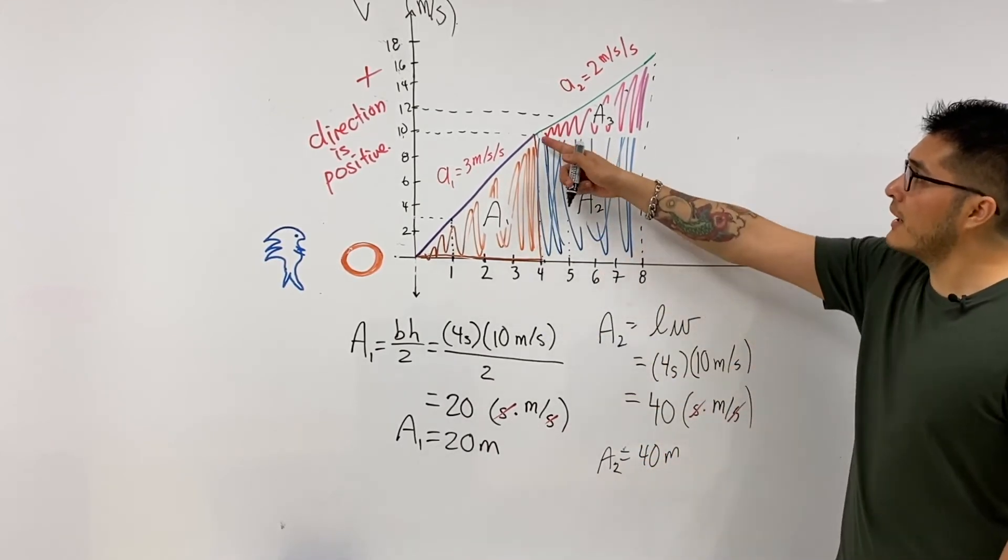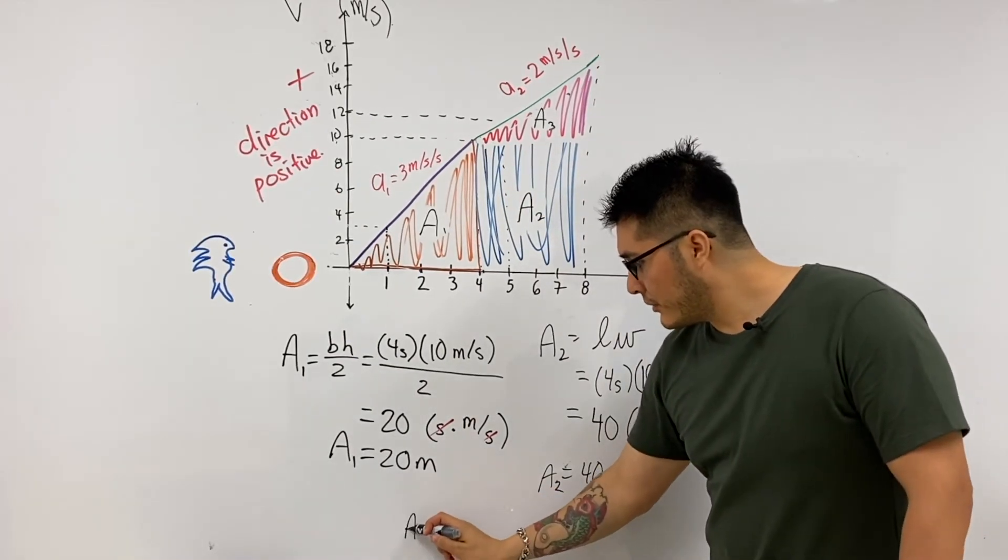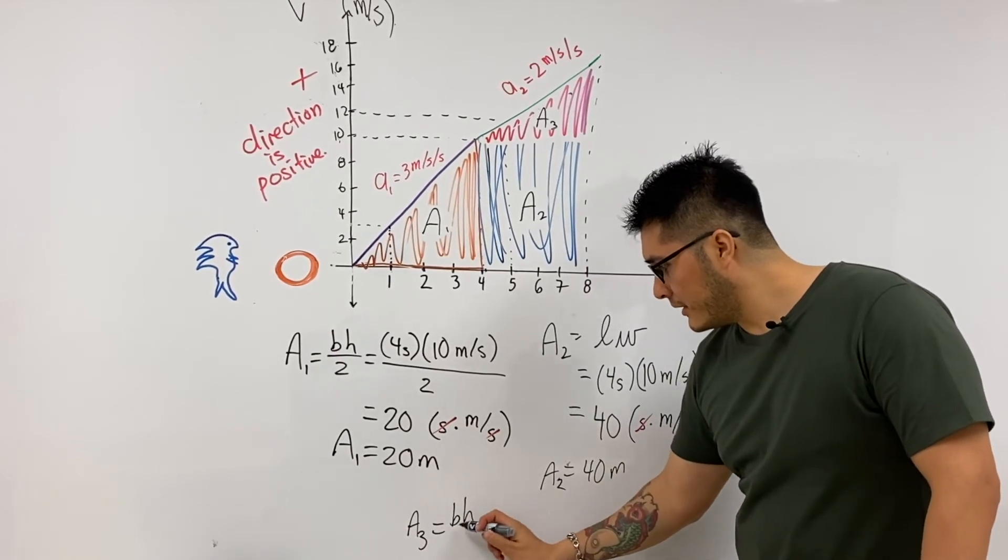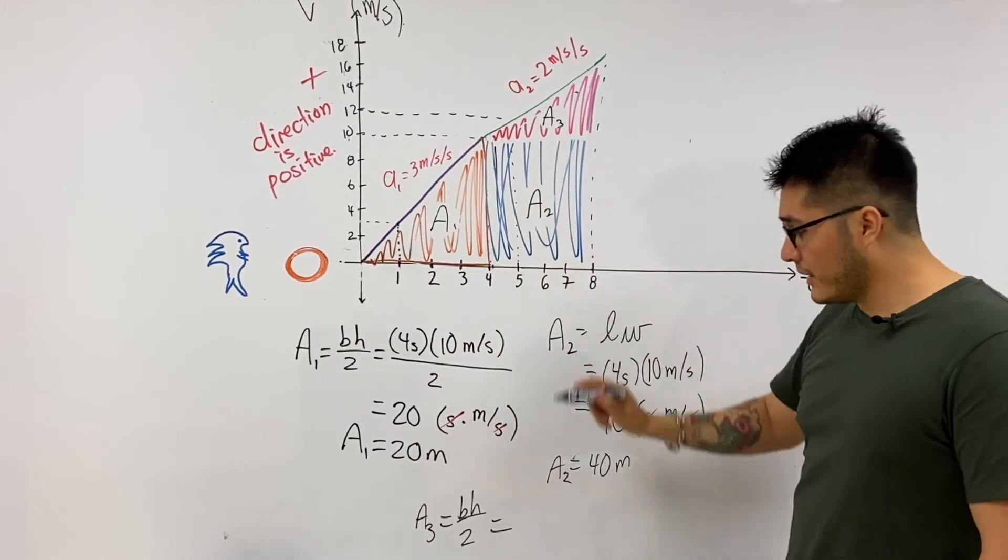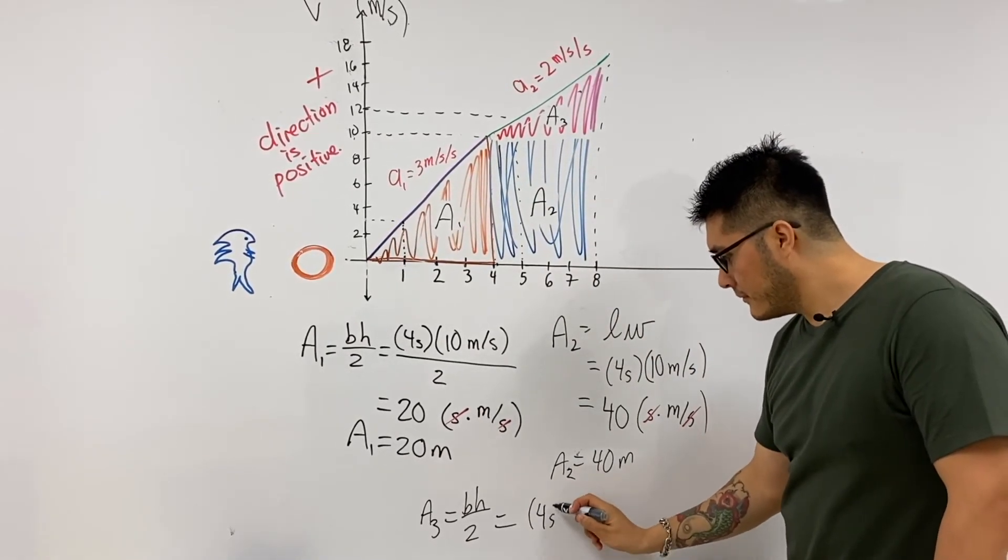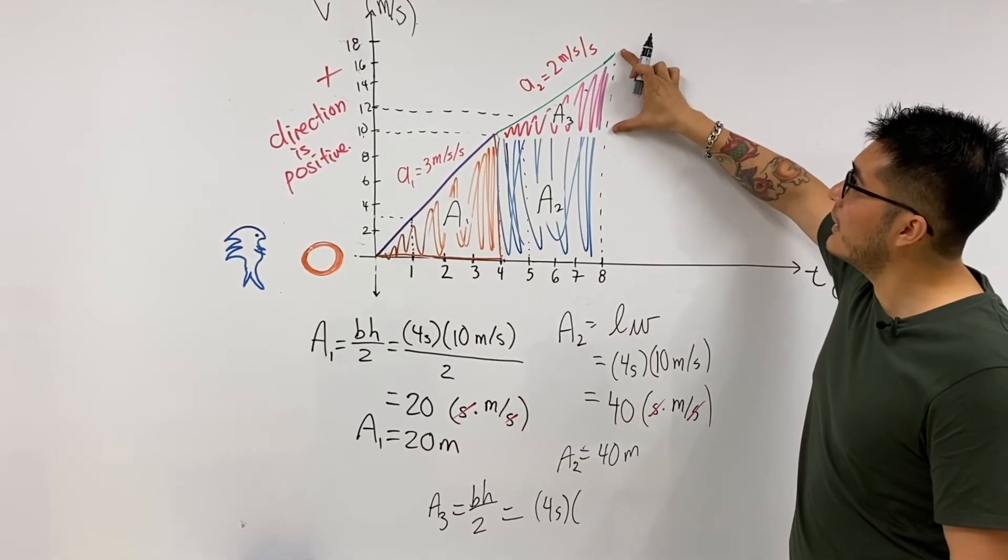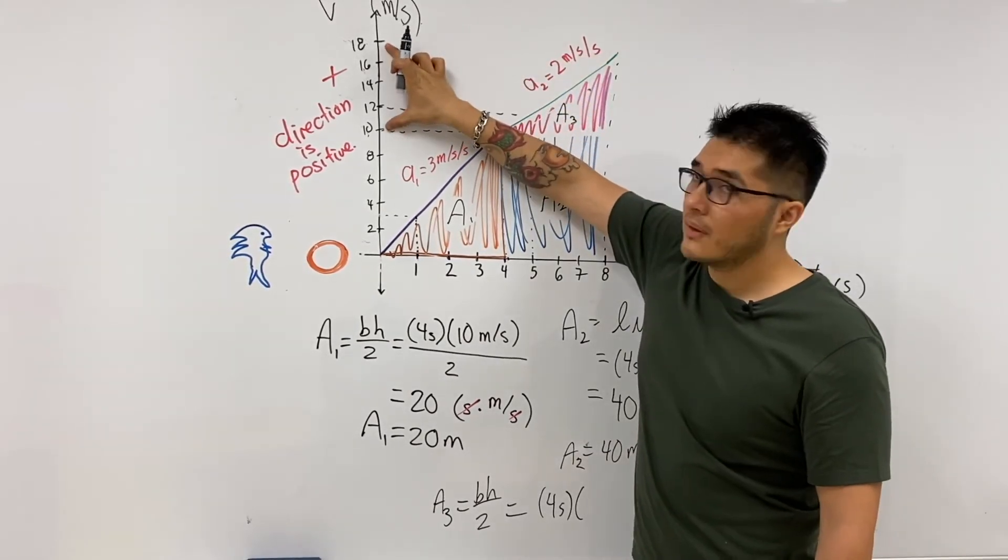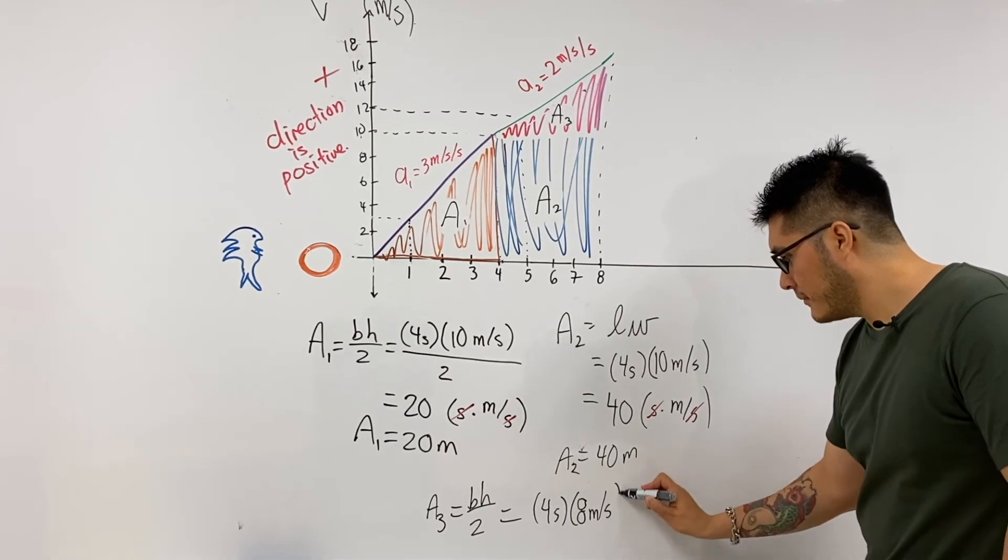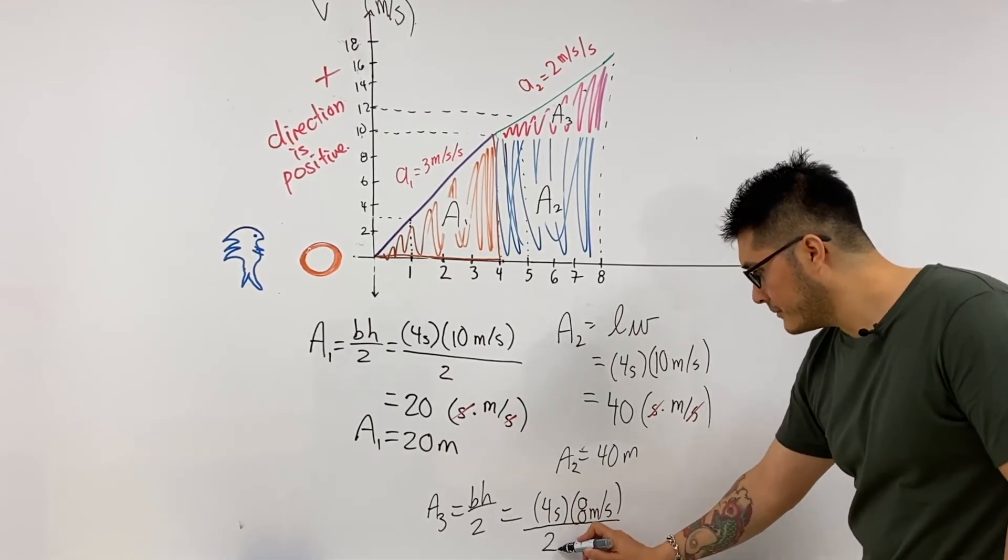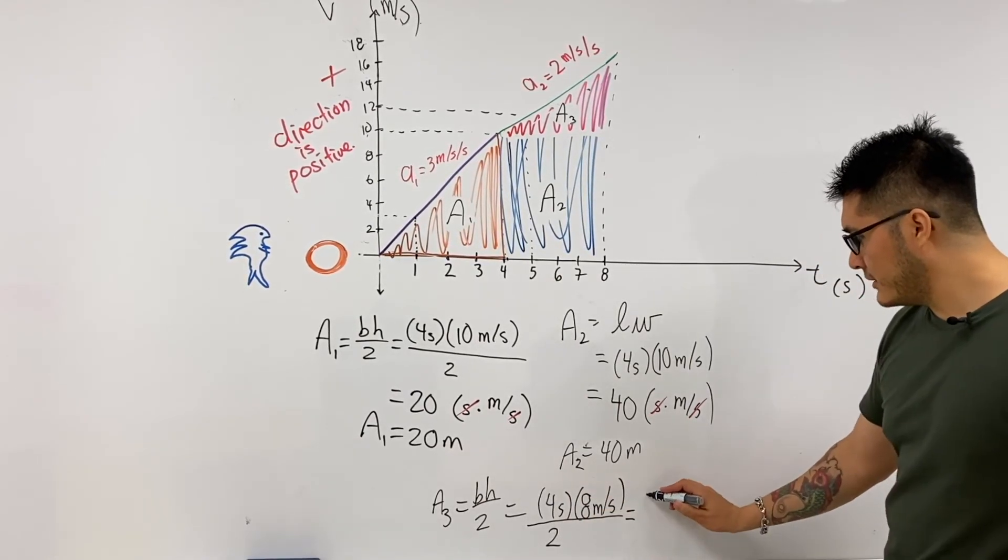But we're not finished because we still need to calculate the third area, which is the one of the triangle. So area three: base times height divided by two. The base in this case is again four seconds. The height is from 10 to 18, so that's going to be eight meters per second, divided by two. So here we have two, which will be just 16 meters.